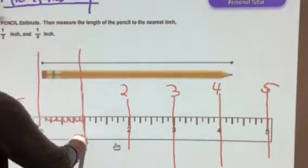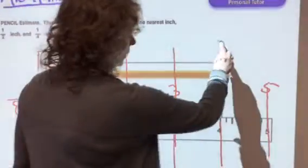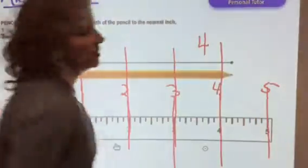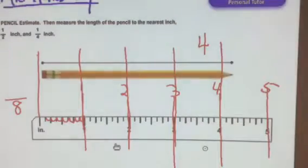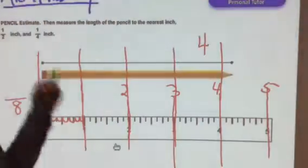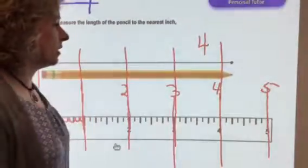It definitely goes past the one, it goes past the two, it goes past the three, it goes past the four. So this is four inches. If they asked me to round to the nearest whole number, is this pencil closer to the four or the five? Right, it's closer to the four. So if they asked me to round to the nearest inch, well that's four inches long.